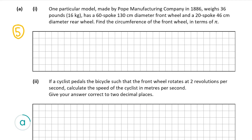We're told that the diameter is 130 centimeters for the front wheel, so the circumference is going to be 130 times pi, which is 130π centimeters. So that's the answer for part one.